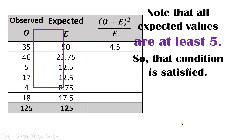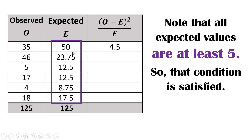One thing we need to notice is that all of these expectations are at least five. That was the third condition that needs to be satisfied to conduct this goodness-of-fit test. I just want to point out that the fifth category has only four observations, which is less than five — but that doesn't matter. What matters is that the expectations under the null hypothesis are at least five, and you can see that they are. So that condition is satisfied.